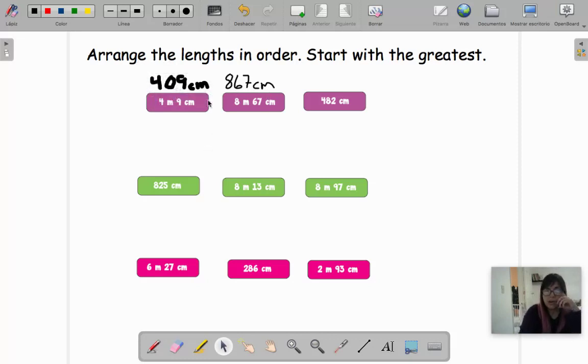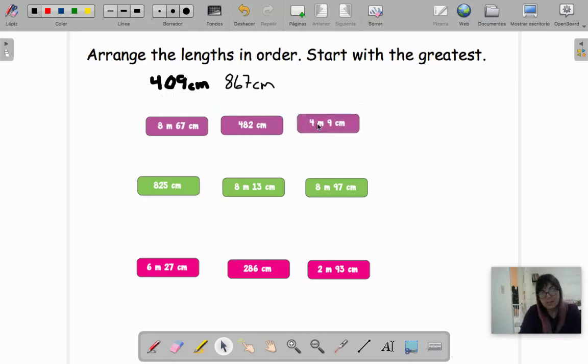So now you can see and compare. Which is the greatest? Because here it says, start with the greatest, the biggest, the longest. So which is the greatest? Let's see. 409, 867. Oh, I can see. What do you think? Excellent. This is the first one. So I'm going to put it here. Then which goes first? Oh my God, I'm going to leave it there so we don't get confused. Then which goes next? 409. It has to be smaller because it's from big to small. So this is the biggest. Then which is bigger? 409 centimeters or 482. Exactly. This is bigger. So this is the smallest. This goes at the end.